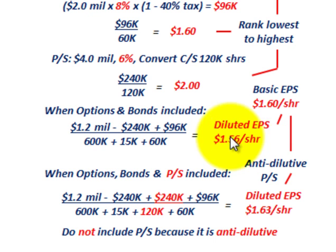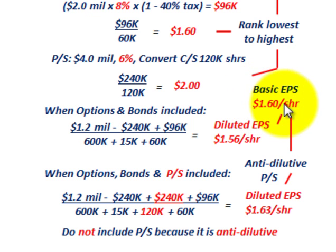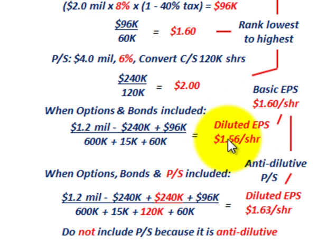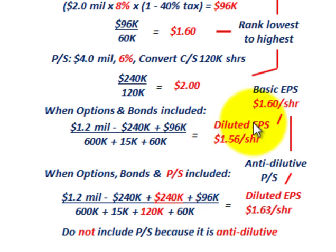Since $1.56 is less than the basic EPS of $1.60, the earnings per share is indeed diluted. So options and bonds would be included in the diluted EPS calculation as reported on the financial statements.